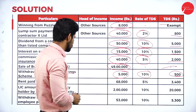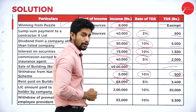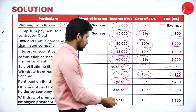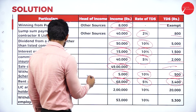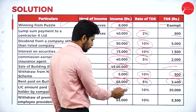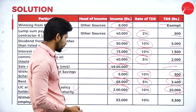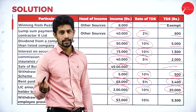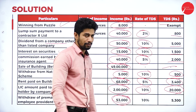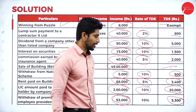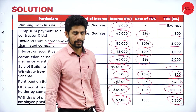Withdrawal from national savings scheme (NSC) is 5,000 rupees — 10 percent TDS: 500 rupees. Rent paid on building is 68,000 per month — more than 50,000, so five percent: 3,400 rupees TDS. LIC amount paid to policyholder is 2 lakhs — one percent is applicable: 20,000 rupees TDS. Premature PF withdrawal is 53,000 rupees; since PAN details are not mentioned, we assume they are furnished, so 10 percent: 5,300 rupees TDS. Total all amounts to get the total TDS deducted.